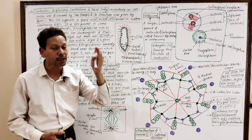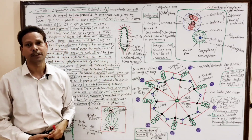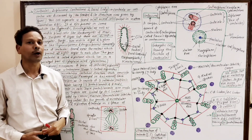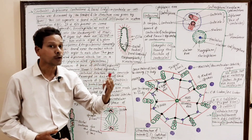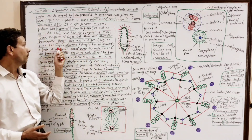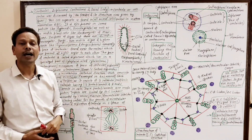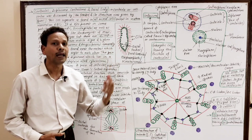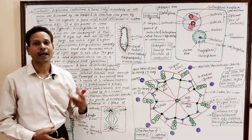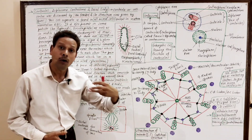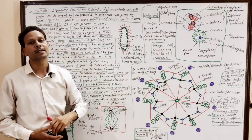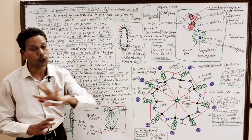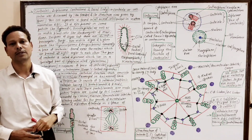Centrioles are absent in case of prokaryotes, in case of fungi, non-motile algae, and in all higher plants like gymnosperms and angiosperms — no centrioles.